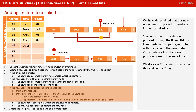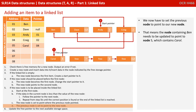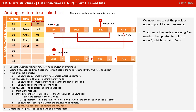So we have determined that our new node needs to be placed somewhere inside the linked list. Starting at the first node, we proceed through the linked list in a linear fashion, comparing each item with the value of the new node, Carol, until we find the correct position or reach the end of the list. We discover Carol needs to go after Ben and before Craig. Next, we set the new node to point to where the previous node pointed — our new node Carol needs to be updated to point to node 4, which contains Craig. We now have to set the previous node to point to our new node, meaning the node containing Ben needs to be updated to point to node 5, which contains Carol.